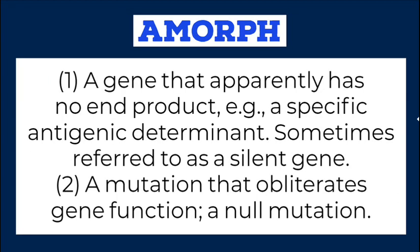Amorph: 1. A gene that apparently has no end product — for example, a specific antigenic determinant — sometimes referred to as a silent gene. 2. A mutation that obliterates gene function; a null mutation.